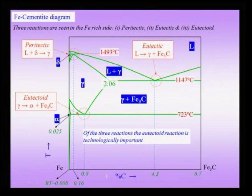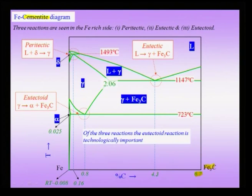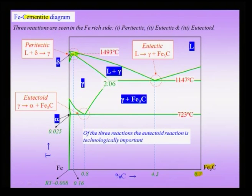Focusing on the iron-cementite diagram, on the iron-rich side extending to 6.67 percent carbon (Fe3C), there are three important reactions. At high temperature is the peritectic reaction. At 1147°C is the eutectic reaction. At 723°C is the eutectoid reaction — the solid-state analog of the eutectic reaction. In the eutectic reaction, liquid gives gamma and Fe3C; in the eutectoid reaction, the solid gamma phase gives alpha and Fe3C.